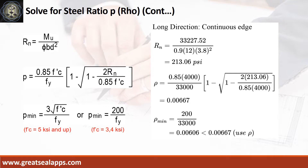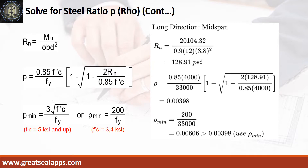Long direction, continuous edge: moment equals 33,227.52 inch-pounds, resistance factor 0.9, b equals 12 inches, d equals 3.8 inches. RN equals 213.06 PSI, ROE equals 0.00667. Mid-span: moment equals 20,104.32 inch-pounds, resistance factor 0.9, b equals 12 inches, d equals 3.8 inches. RN equals 128.91 PSI, ROE equals 0.00398. Use ROE minimum of 0.00606.